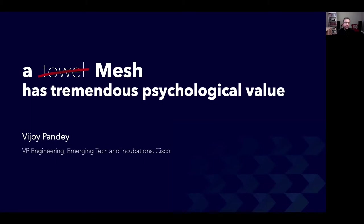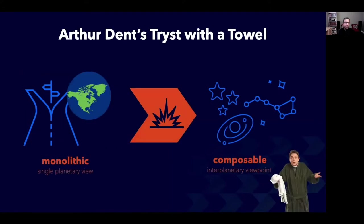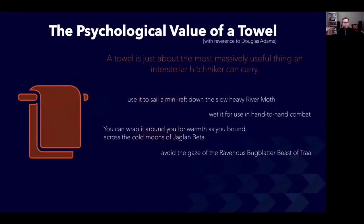But before I begin, if you haven't read The Hitchhiker's Guide to the Galaxy, please get your copy today. That book starts with the protagonist Arthur Dent waking up to realize that his world, planet Earth, was in the path of an intergalactic highway. The monolith that was planet Earth had to be suddenly blown up, and Arthur had to deal with a composable interplanetary viewpoint and a very large distributed system. It was in this distributed system that he was made aware of the benefits of a towel. Arthur learns that in the large distributed system that is the galaxy, a towel is the most useful thing a hitchhiker can carry with him.